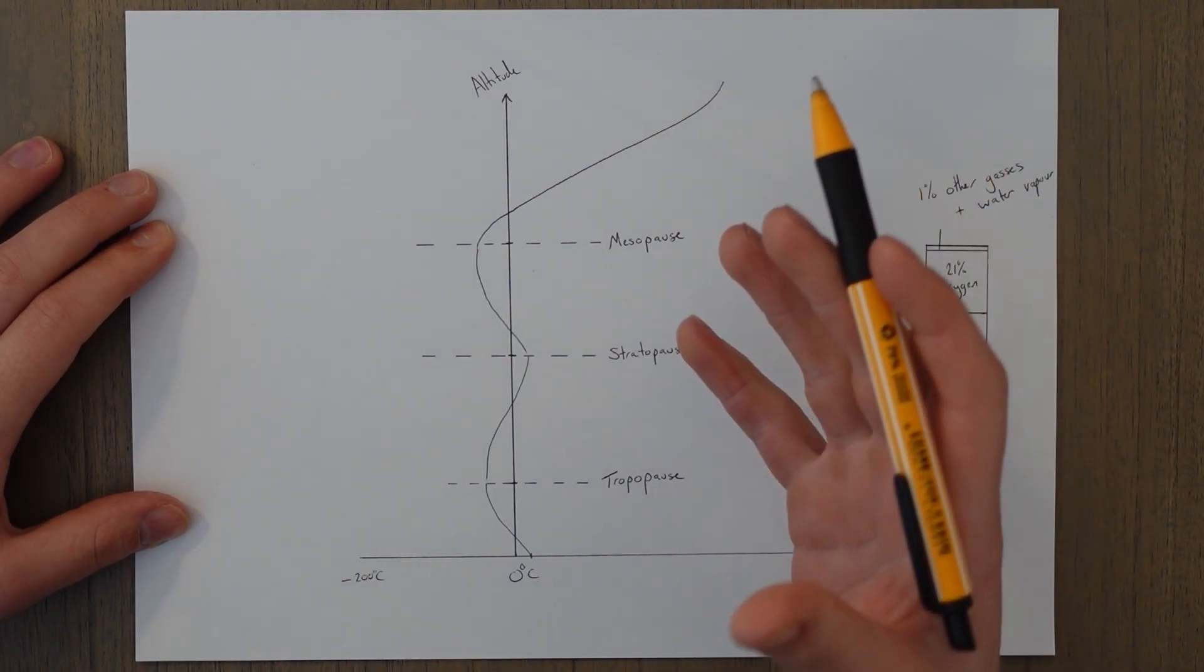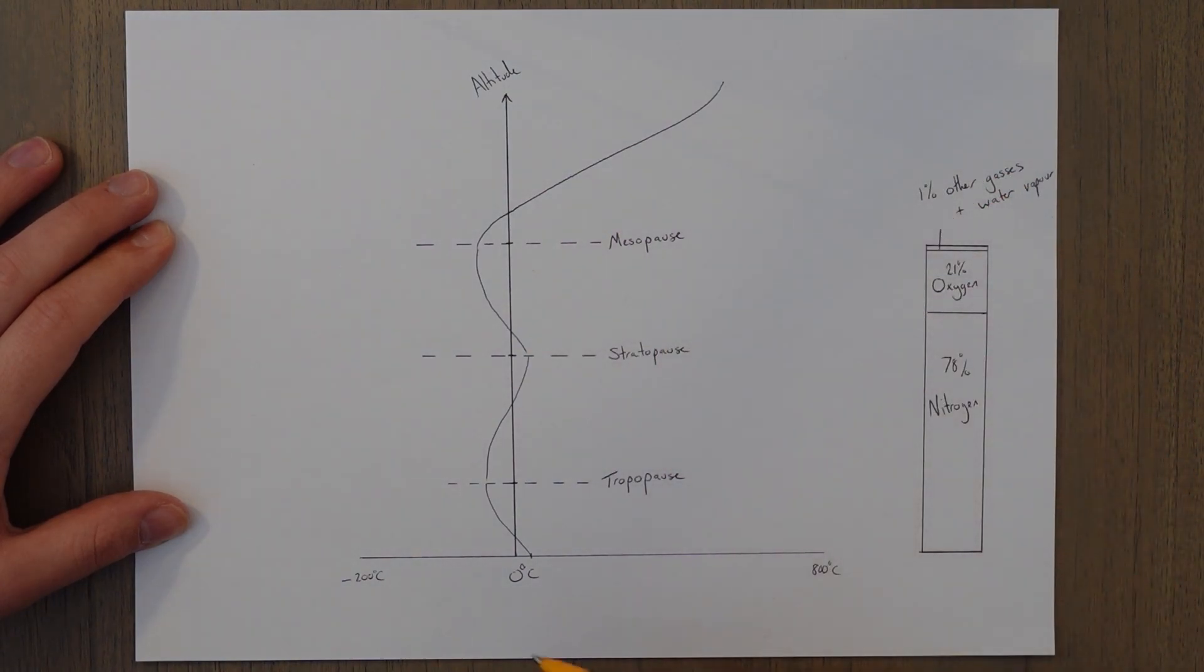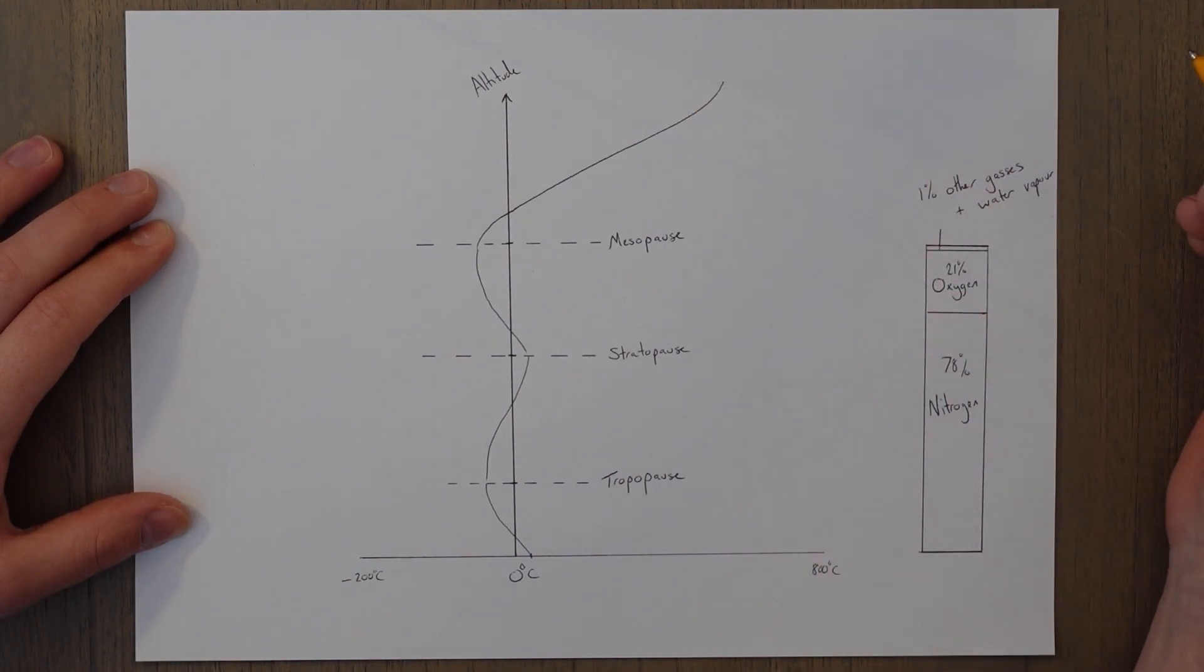The layers are mainly defined in terms of what happens to the temperatures in the different layers. You can see it starts to reduce and the line waves around as we increase in altitude.